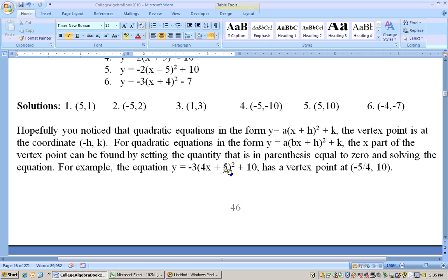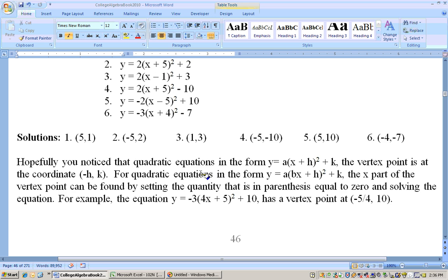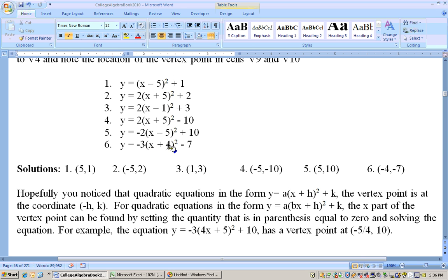Okay, now if you ever have a quadratic like this, then what you would need to realize for the vertex point is you set what's inside the parentheses equal to 0 to get the X part of the vertex point. Like the reason why this X part of the vertex point is at negative 4 is because you set X plus 4 equal to 0. If you set X plus 4 equal to 0, you take the 4 to the other side, you get X equals negative 4. So to find the vertex point on this, you would set the 4X plus 5 equal to 0, take the 5 to the other side, you get 4X equals negative 5, then divide through by 4, and you get X equals negative 5 fourths.